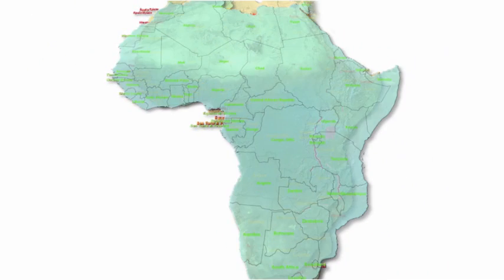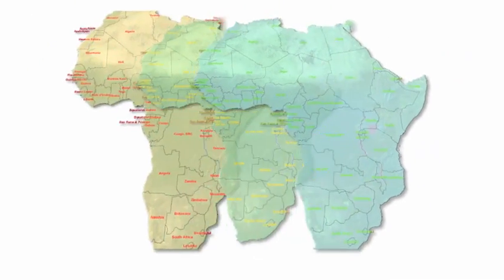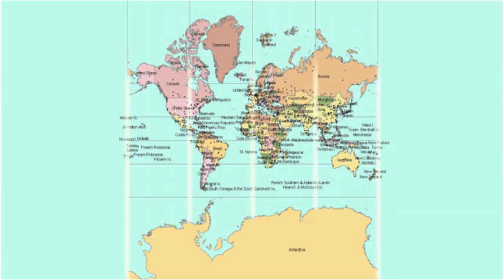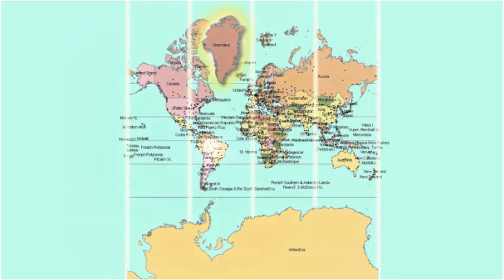That's why there's no such thing as the perfect map projection. For example, using the Mercator projection, Antarctica appears to be a huge continent that wraps around the Earth, and Greenland appears to be just as large as South America, although Greenland is actually only about one-eighth its size.